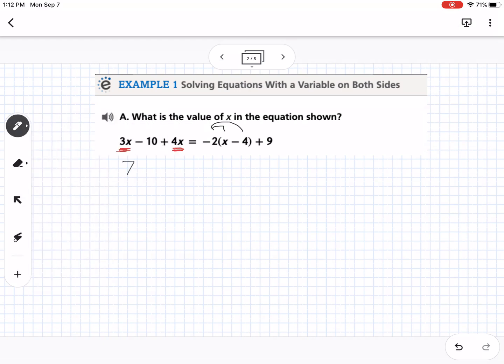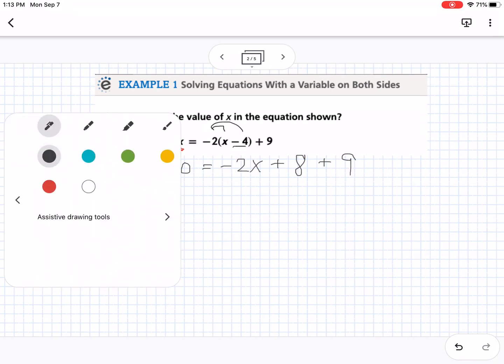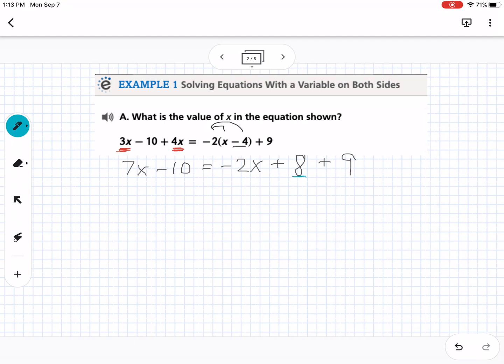So that becomes 7x minus 10 on the left, and then on the right, I'm going to distribute. So I'm going to take the negative 2 times x, gives me negative 2x, negative 2 times a negative 4. So be careful and look at the sign in front of the number. So a negative 2 times a negative 4 becomes a positive 8, and then plus 9. Now I'm going to use blue for constants. So over here, I have an 8 and a 9, and I can combine those because they're on the same side of the equation. So that's going to be 7x minus 10 equals negative 2x plus 17.